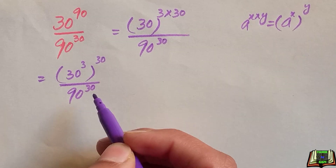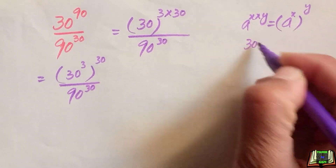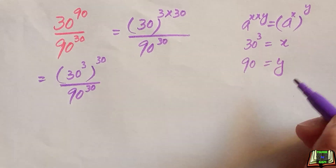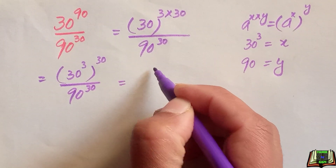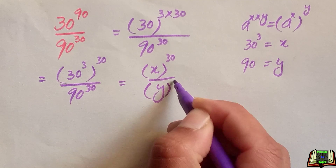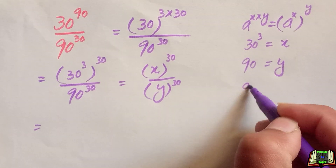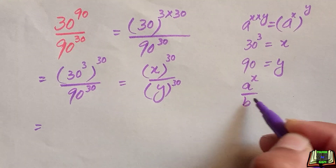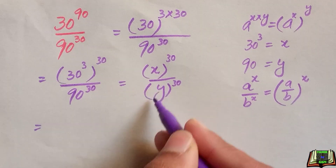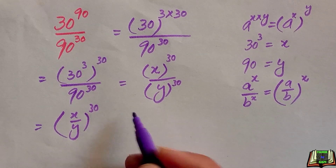Now let's suppose the value 30 raised to power 3 is equal to x, and 90 is equal to y. After substituting, we have x raised to power 30 divided by y raised to power 30. For dividing the same powers with different bases, we use the power of a quotient rule: a raised to power x divided by b raised to power x equals a divided by b, whole raised to power x. So we write it as x divided by y, whole raised to power 30.